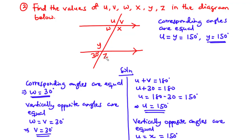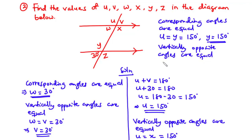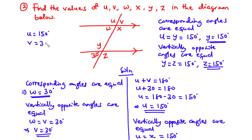Y and Z are vertically opposite angles, and vertically opposite angles are equal, so Y equals Z equals 150 degrees. In summary: U is 150 degrees, V is 30 degrees, W is 30 degrees, X is 150 degrees, Y is 150 degrees, and Z is 150 degrees.